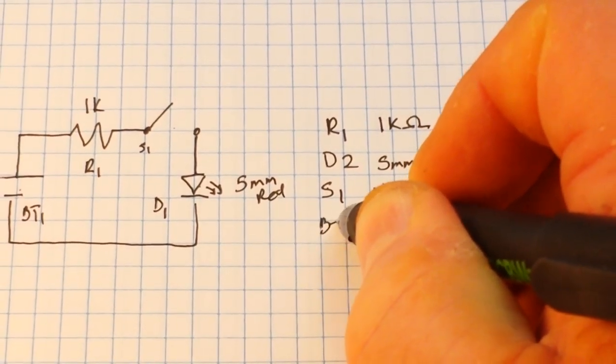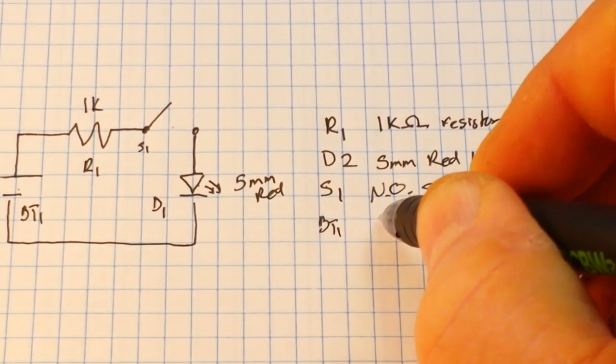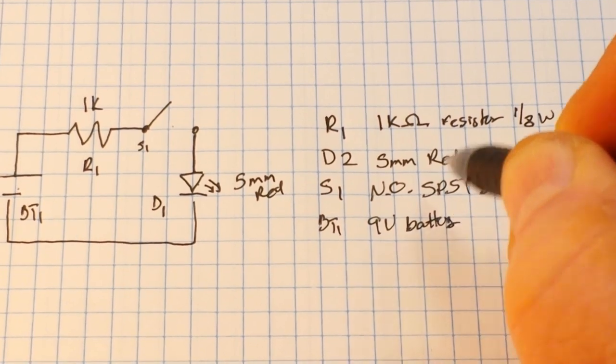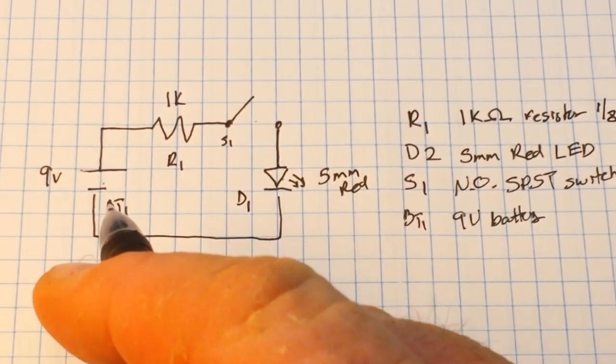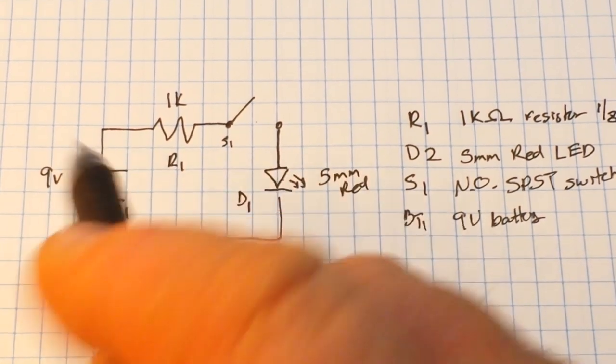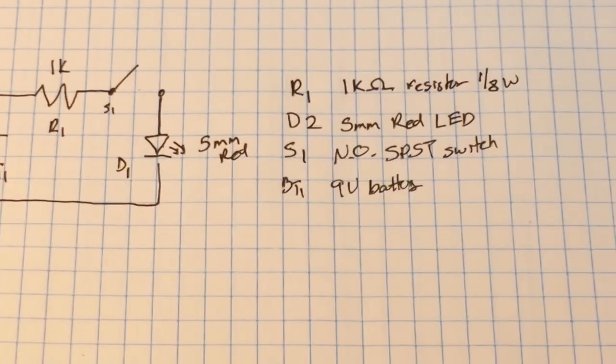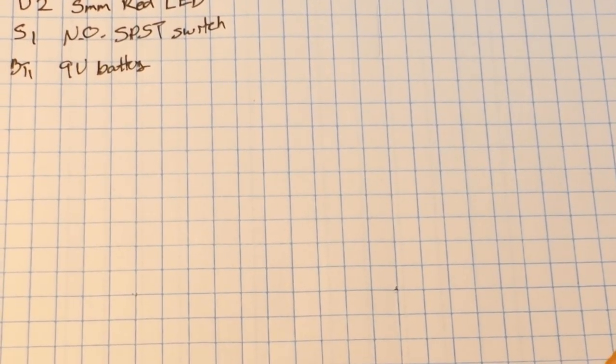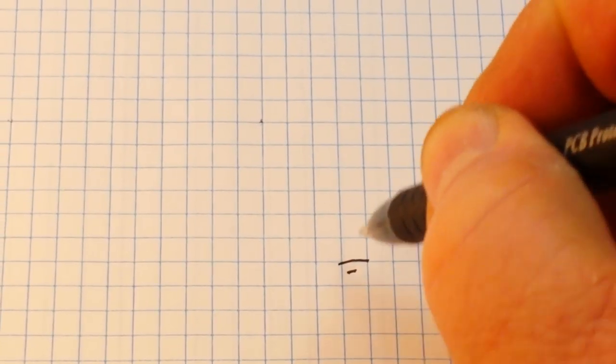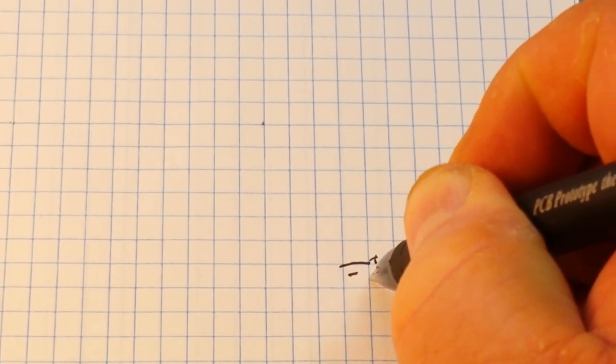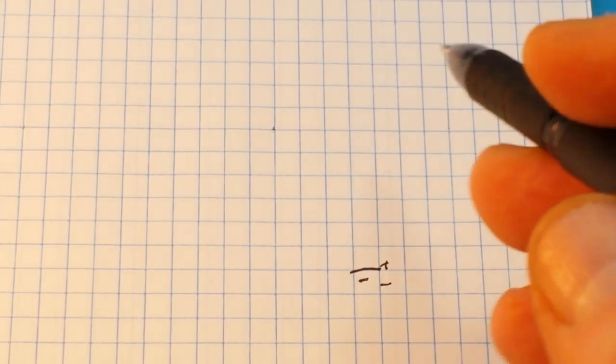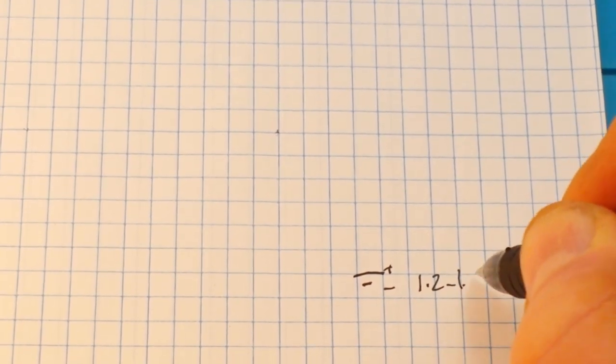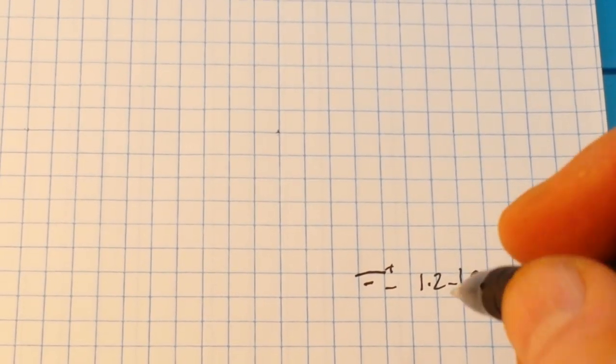Then we have BT1 which would probably be listed as simply 9 volt battery. Now what I've actually drawn here is not a 9 volt battery, this is in fact a single cell. So let's just go down here. This is a symbol for a cell. The large line is your positive, the small line is your negative.